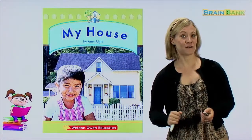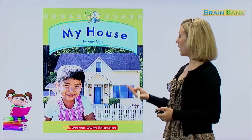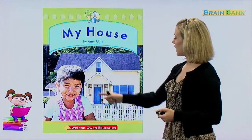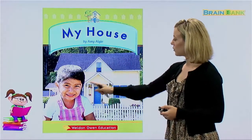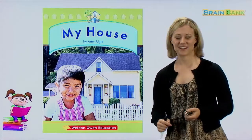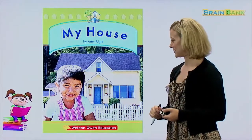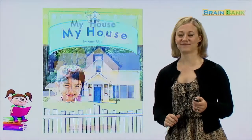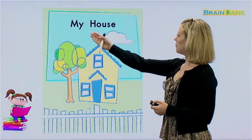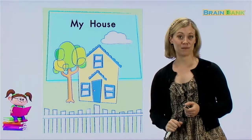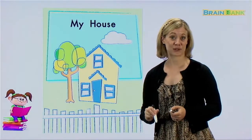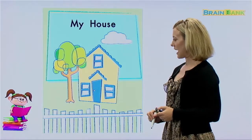Here on the cover of the book we can see a picture of exactly what the title mentions. We see a house, and this little girl — we can guess that this is her house. She is showing us her house. Here again is a picture of a house. My House is the title of the book, and it looks like somebody maybe drew or colored this picture. It's a very nice picture of a house.